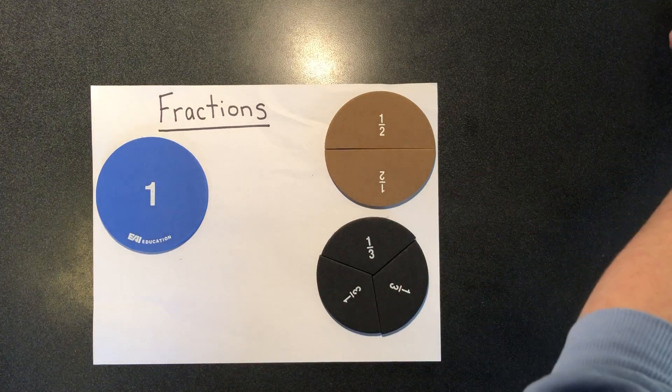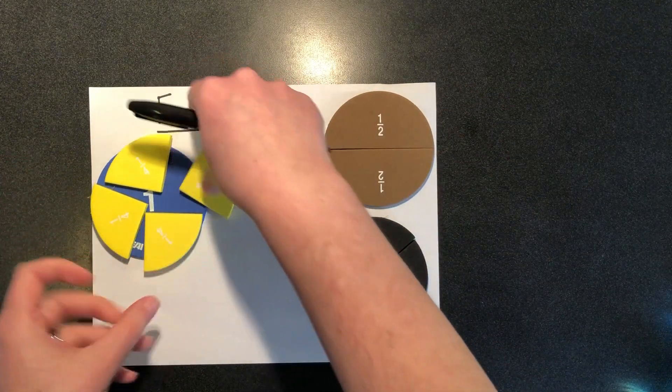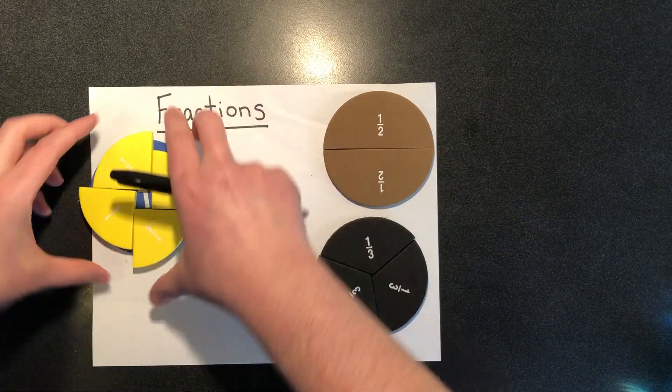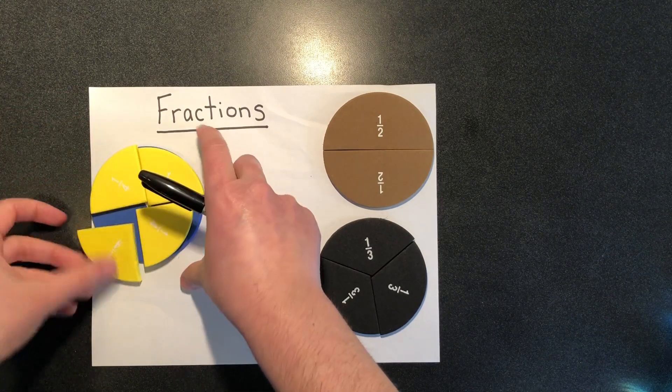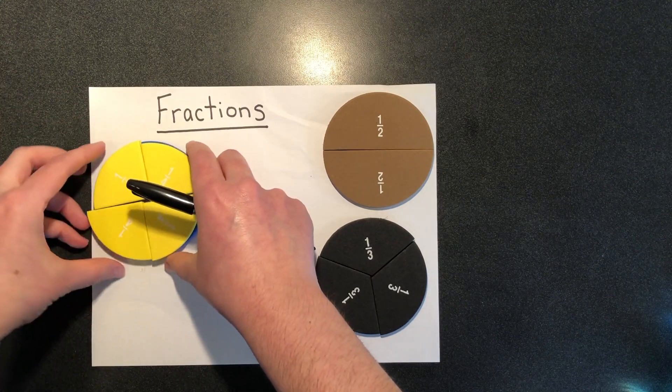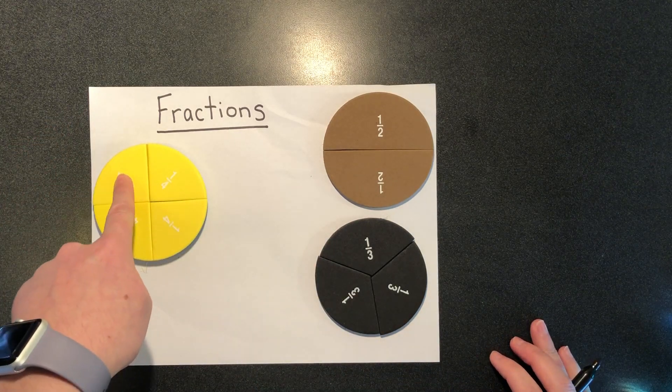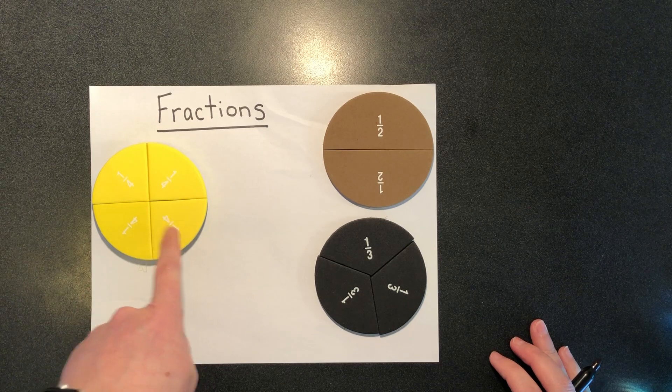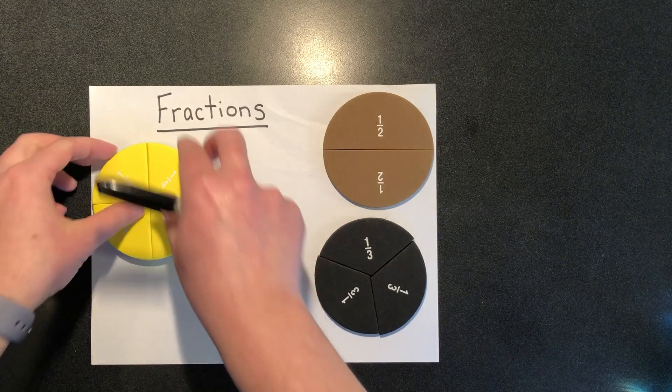If I were to break it into four equal pieces, I would have one fourth, two fourths, three fourths, four fourths. Four fourths equals one whole.